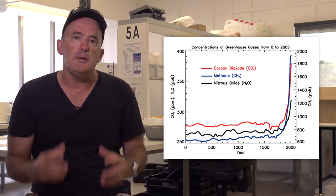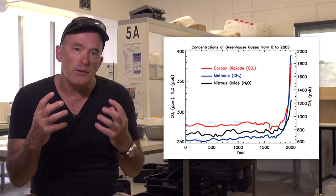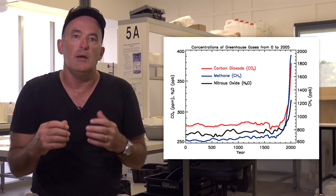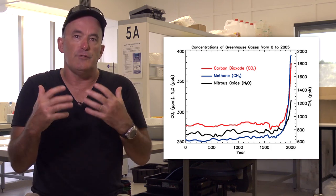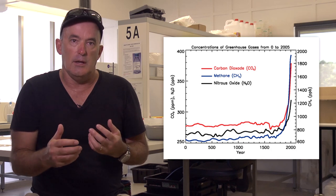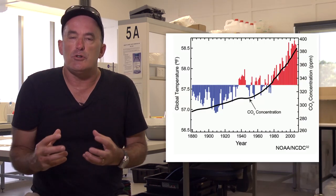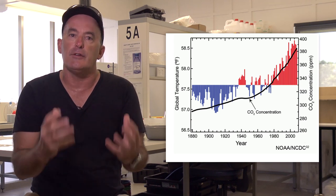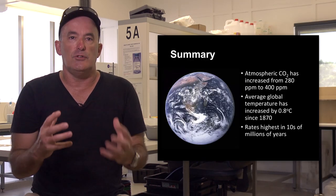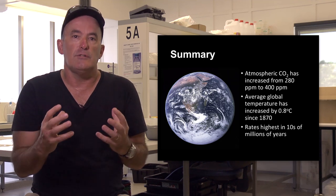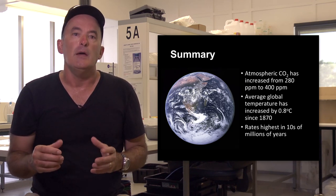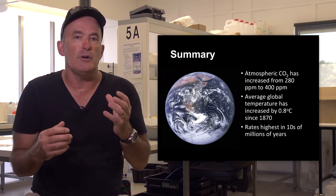However, 150 years ago the heat balance of the Earth began to change. The first change was that the atmospheric concentration of greenhouse gases, such as carbon dioxide and methane, began to increase as a result of the escalation of the use of fossil fuels such as coal, oil and gas as the Industrial Revolution took place. The second change was that the average temperature of our planet began to increase in response. Today the concentration of carbon dioxide has increased to 400 parts per million, which is 120 parts per million more than it was prior to 1870. In response, average global temperature has increased by 0.8 degrees Celsius.